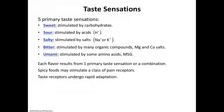Sweet taste is elicited by many organic substances including sugars, saccharine, alcohols, some amino acids, and some lead salts such as those found in lead paint — so please ensure any lead paint is safely removed or encapsulated, particularly around young children. Sweet receptors are stimulated by carbohydrates, and a few inorganic substances like lead and beryllium salts also elicit sweet taste. Sour taste is elicited by acids — specifically their hydrogen ions in solution. The intensity of sourness is proportional to the concentration of hydrogen ions.